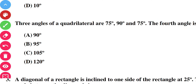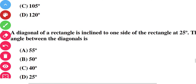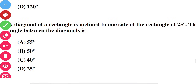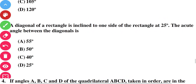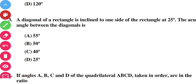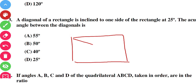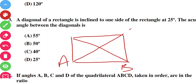Question number three: a diagonal of a rectangle is inclined to one side at an angle of 25 degrees. You have to find the acute angle between the diagonals. Let us draw rectangle ABCD. The diagonal is inclined at 25 degrees to one side — you have to find the acute angle between the two diagonals.